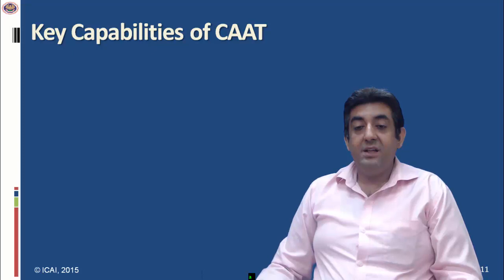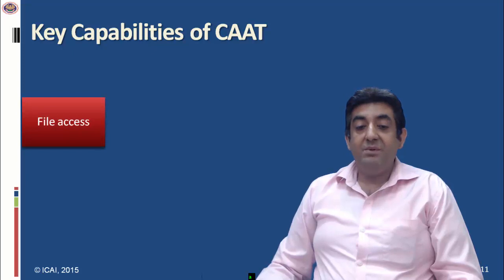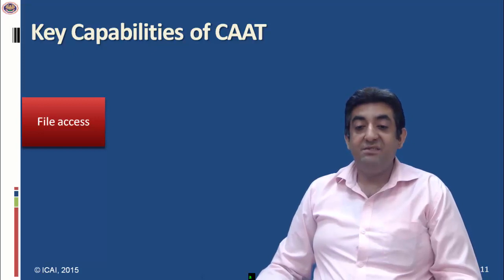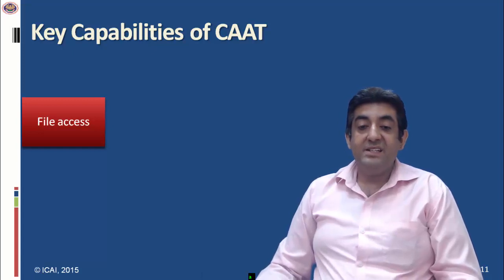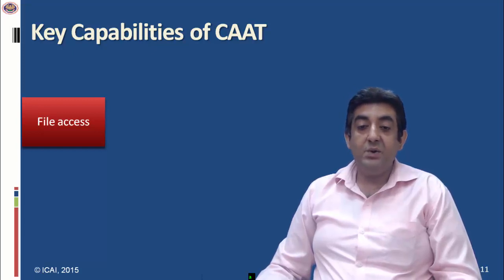Next, what are the key capabilities of CAAT? The first capability is file accessing, which is a very important ability. This refers to the capability of accessing data from different platforms and different architectures and converting it to a commonly used format.